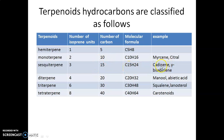Examples of sesquiterpenes are cadinene and gamma-bisabolene. Diterpenes are the terpenoids which consist of four isoprene units and the number of carbons is 20, so the molecular formula is C20H32. Examples are manol and abietic acid.